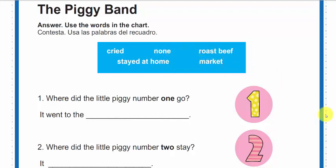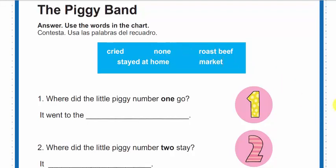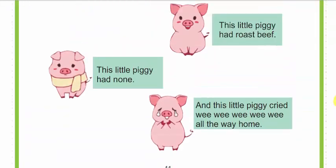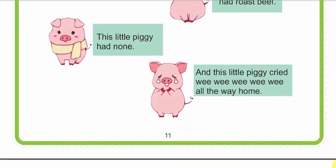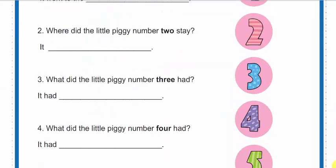Bueno, creo que ya lo saben, ¿verdad? Porque igual verificamos en la anterior y podríamos determinar que this little piggy had roast beef. Entonces, la respuesta para la pregunta número tres sería: It had roast beef.